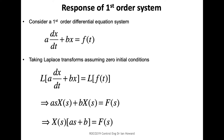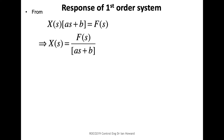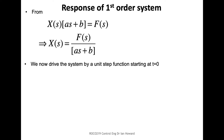We can factorize out X of s and rearrange, ending up with X of s in terms of F of s — basically F of s divided by (as + b). If we drive this system by a unit step starting at t equals zero,